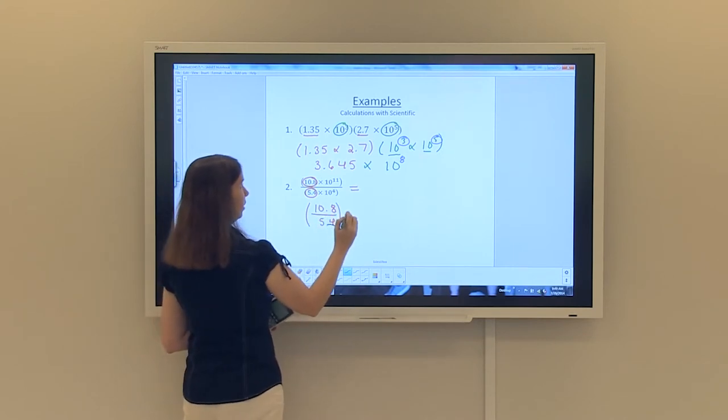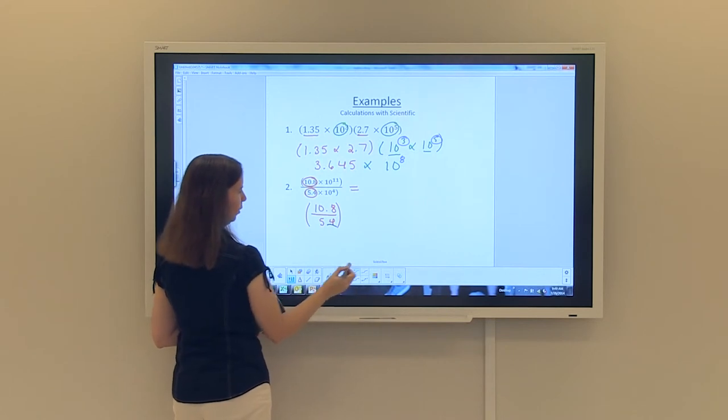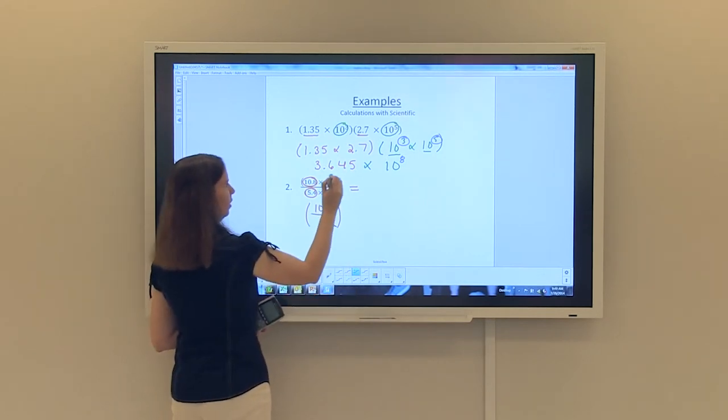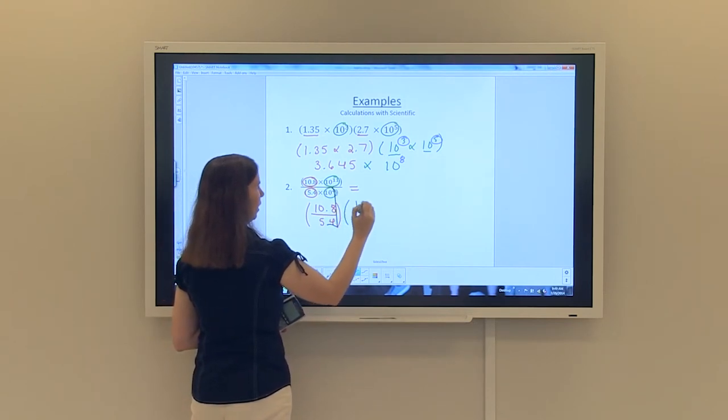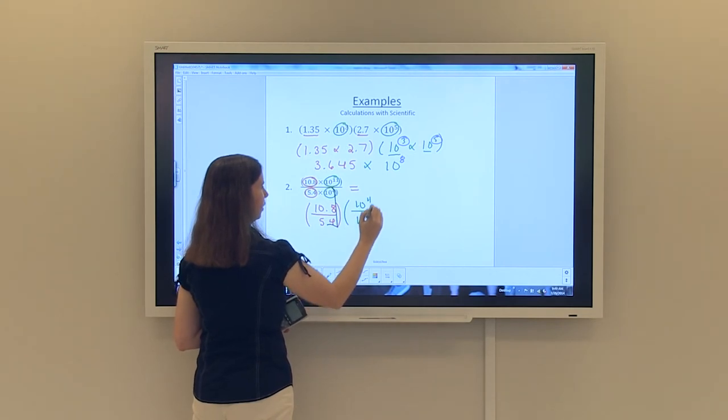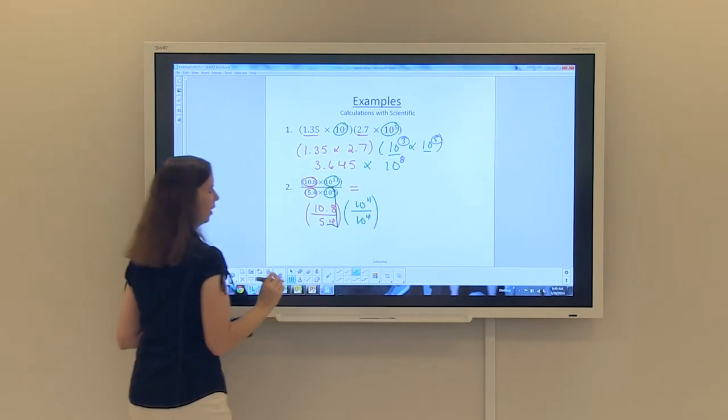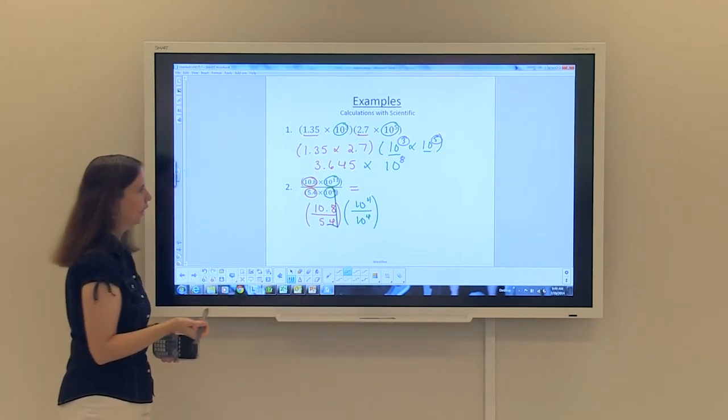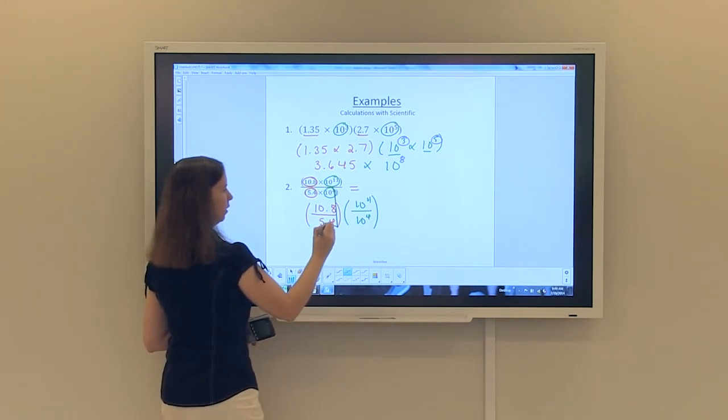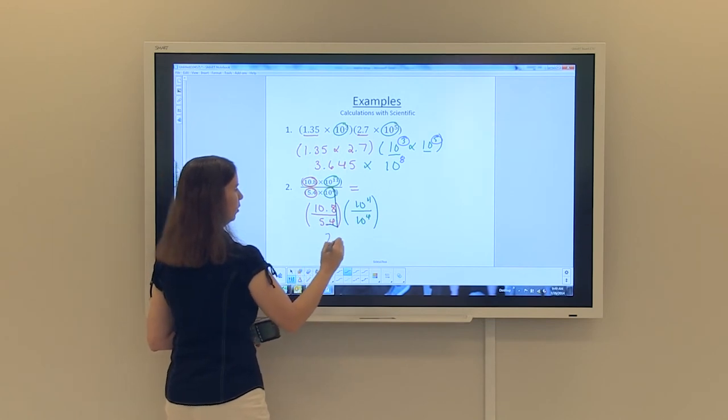And then I'm going to group the bases of 10 together. So 10 to the 11th divided by 10 to the fourth. And again, we're going to get to use some of our exponent rules here. So starting with the red, 10.8 divided by 5.4 is simply 2, and then times.